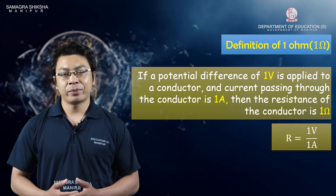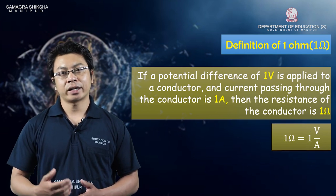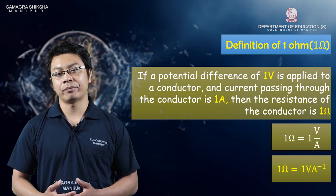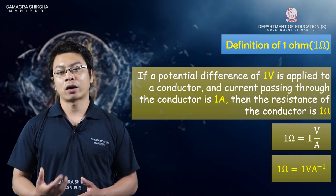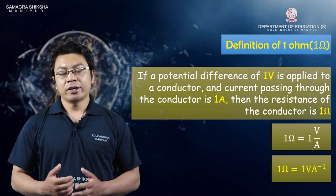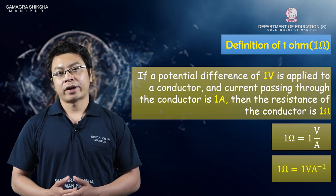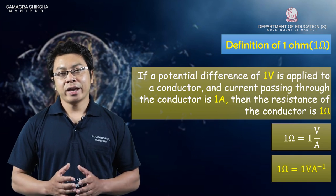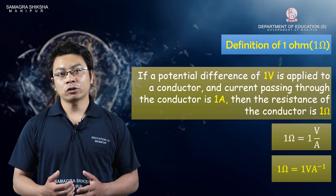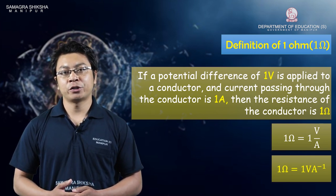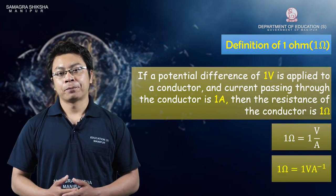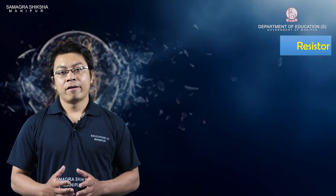The current is 1 ampere (1A). 1 divided by 1 is 1. So 1 volt per ampere equals 1 ohm. That means 1 ohm is 1 volt per ampere. The conductor's resistance is 1 ohm — this is the conductor with 1V of potential difference applied, which is the definition of 1 ohm.